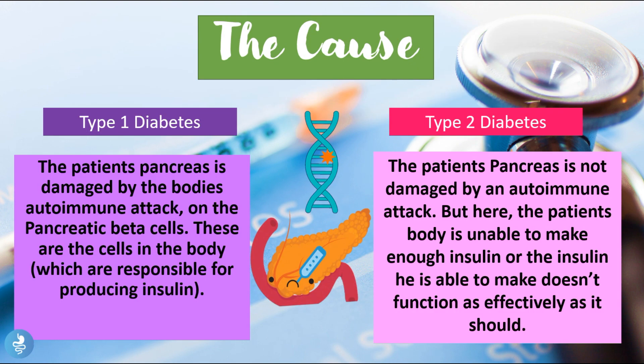The first difference we're going to look at is the cause. In type 1 diabetes the patient's pancreas is damaged by the body's autoimmune attack on the pancreatic beta cells. These are the cells responsible for producing insulin, so in type 1 diabetes we have low or no levels of insulin in the blood because the beta cells are damaged by an autoimmune attack.